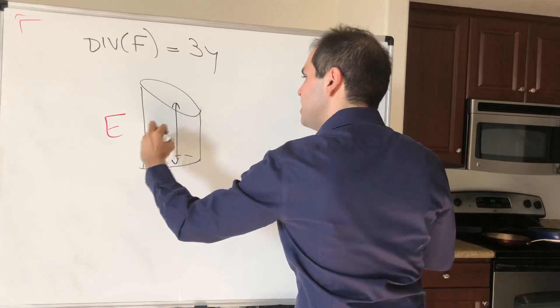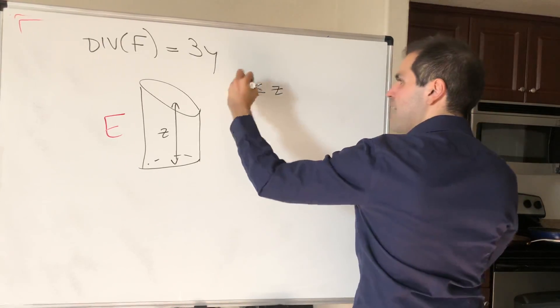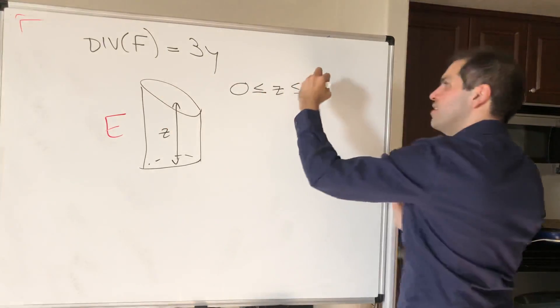Well, z is between the smaller function, which is 0, and the bigger function, which is the tilted can, so 2 minus y.